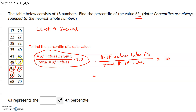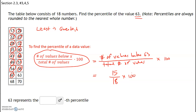So we count: 1, 2, 3, 4, 5, 6, 7, 8, 9, 10, 11, 12, 13, 14, 15. Not counting 63, we only count the number of values that are below 63. We have 15 values below 63, the total number of values is 18, and then we're going to multiply that by 100 to convert that to a percentile.